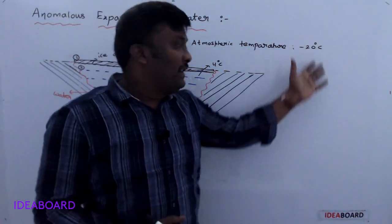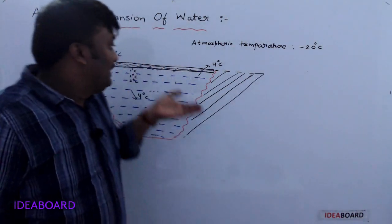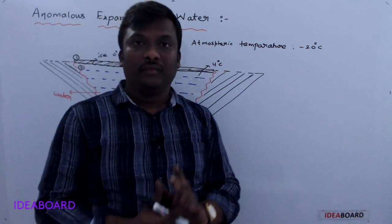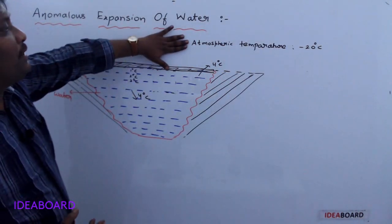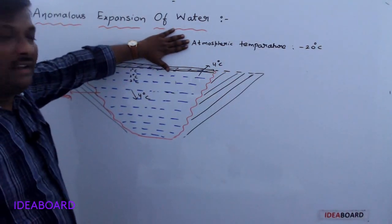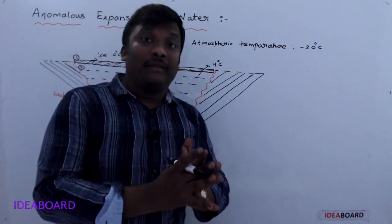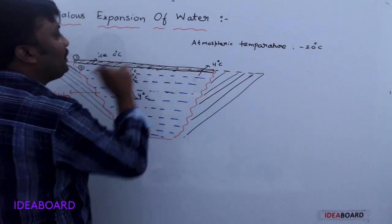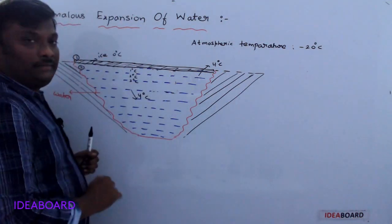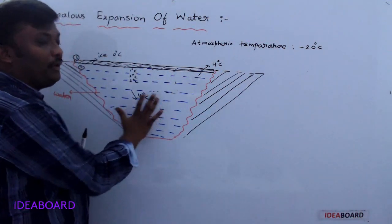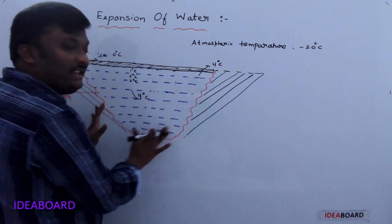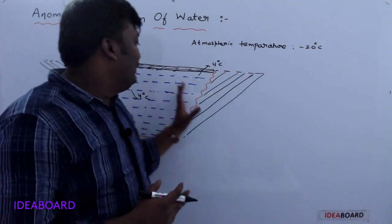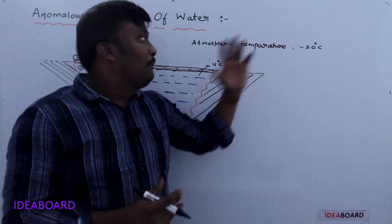If the atmospheric temperature reduces further, the thickness of the ice layer increases on the outer side. So when the atmosphere temperature is below 0 degrees Celsius, only the surface of the water has a growing layer of ice. Below that, the water remains at 4 degrees Celsius and stays in liquid state. This is how fish, seals, and polar bears survive within this water even when the outside temperature is very low.